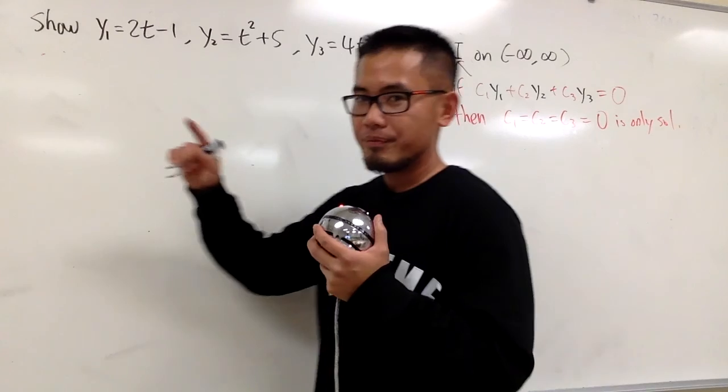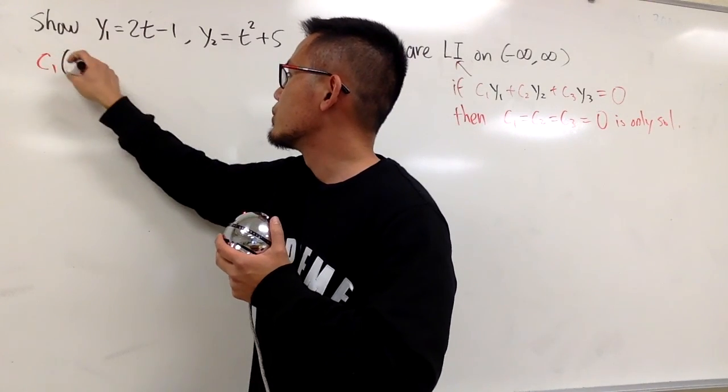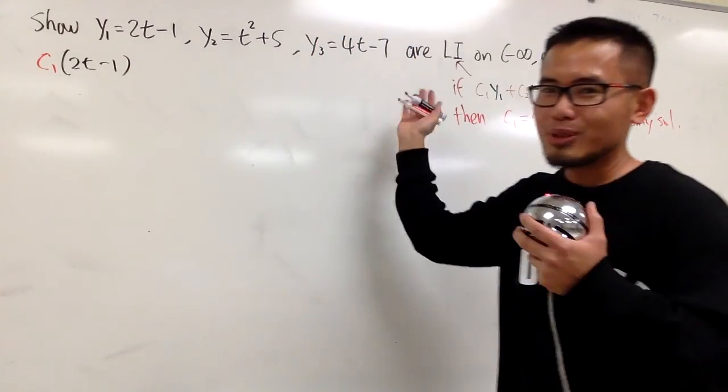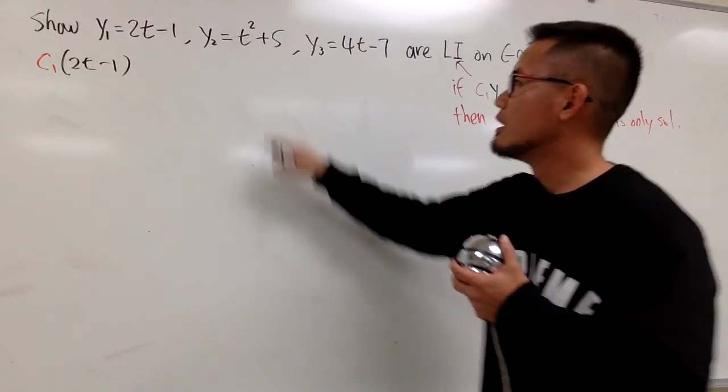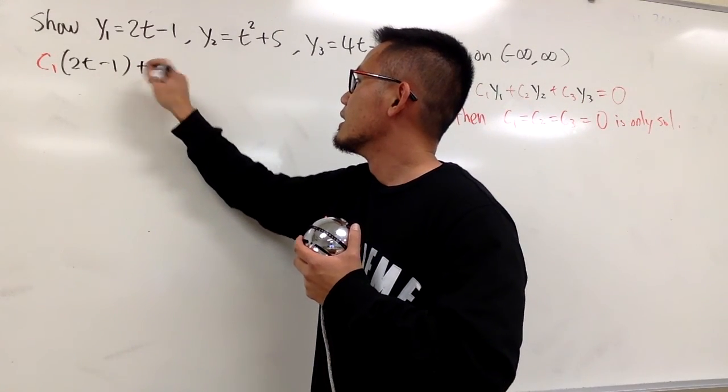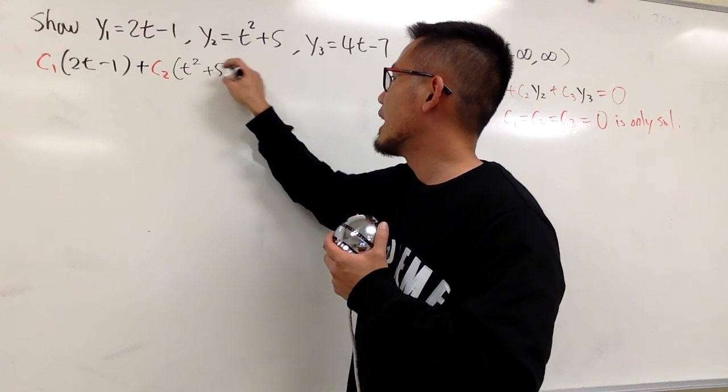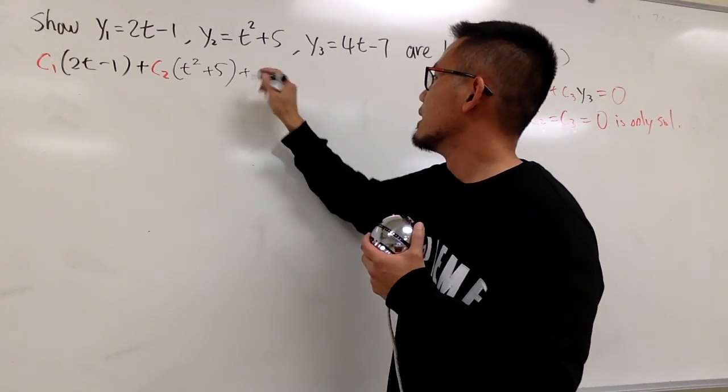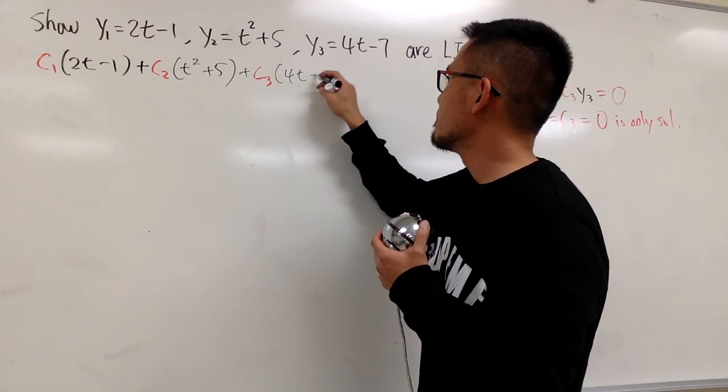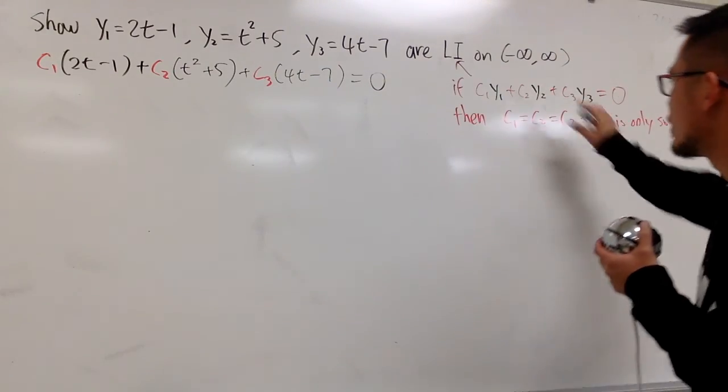Anyways, let's go. So, let's see, I'm just going to put this down right here, c1 times that, which is 2t minus 1, and you notice, pretty much, this is pretty much the same as the previous example, right? The only thing that's different is t squared. Anyways, continue. Plus, c2 times that, which is t squared plus 5, and then plus c3 times that, 4t minus 7. I first make this equal to 0, right? I start with that.